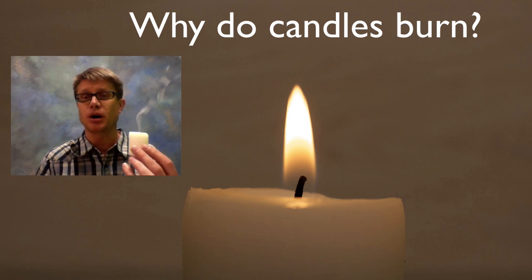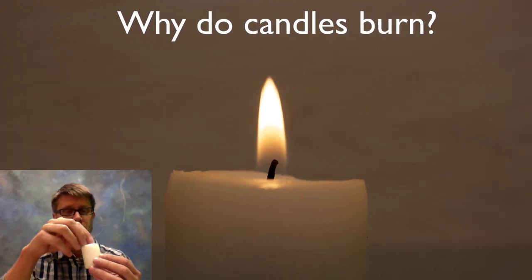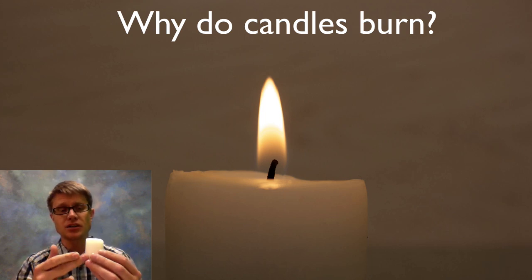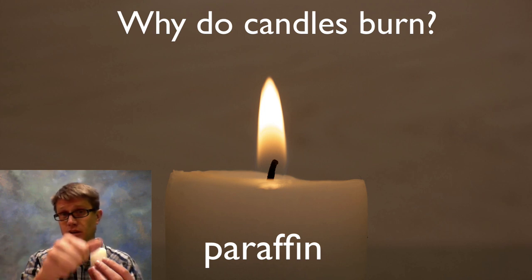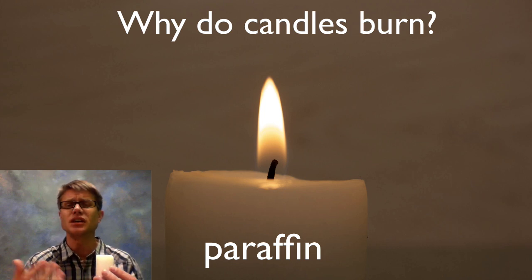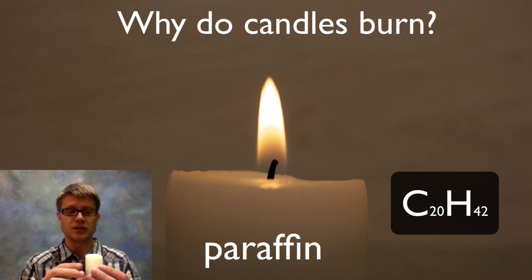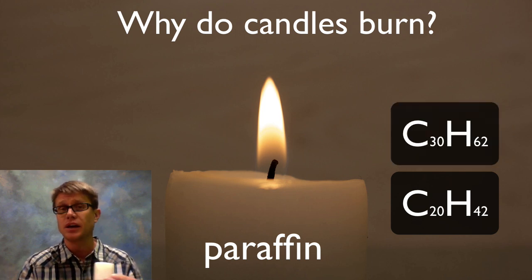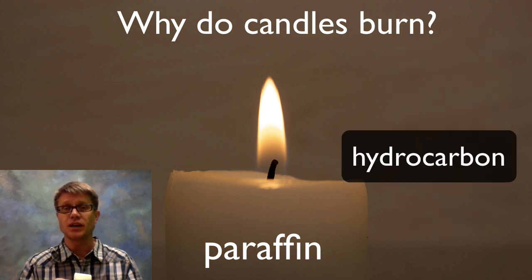First we should talk about the different parts of a candle — the wax part and the wick part on the inside. The candle is actually made usually from something called paraffin, which is made up of two different atoms: carbon in the middle of the molecule and hydrogen around the outside. So in here we might have molecules that are C20H42, meaning 20 carbons with hydrogen around the outside. It might be C30H62 or C40H82. Basically what you have is a hydrocarbon — a bunch of carbons in the middle and hydrogen around the outside.